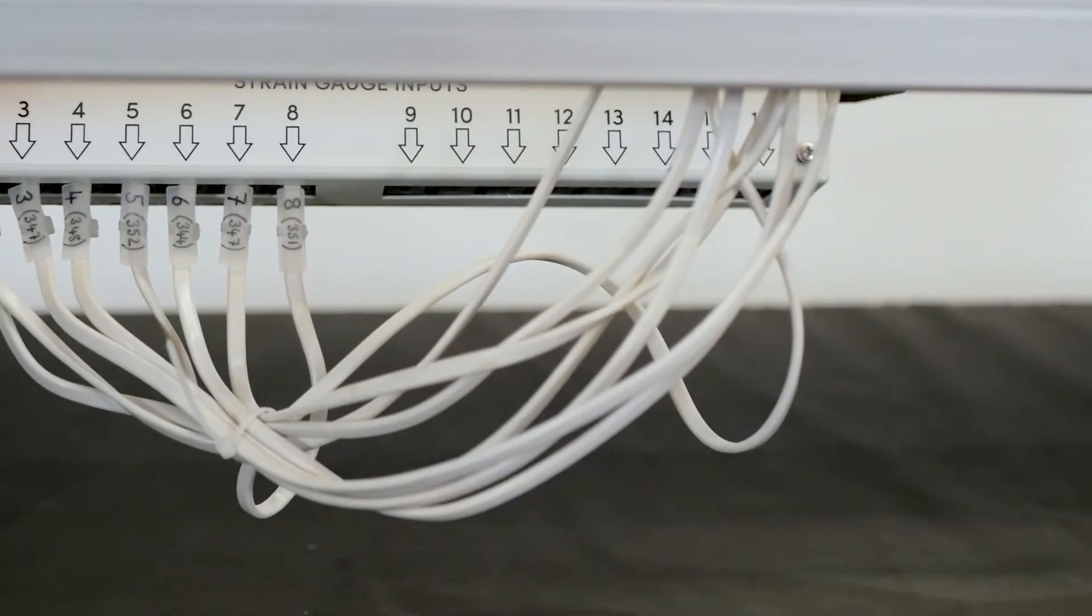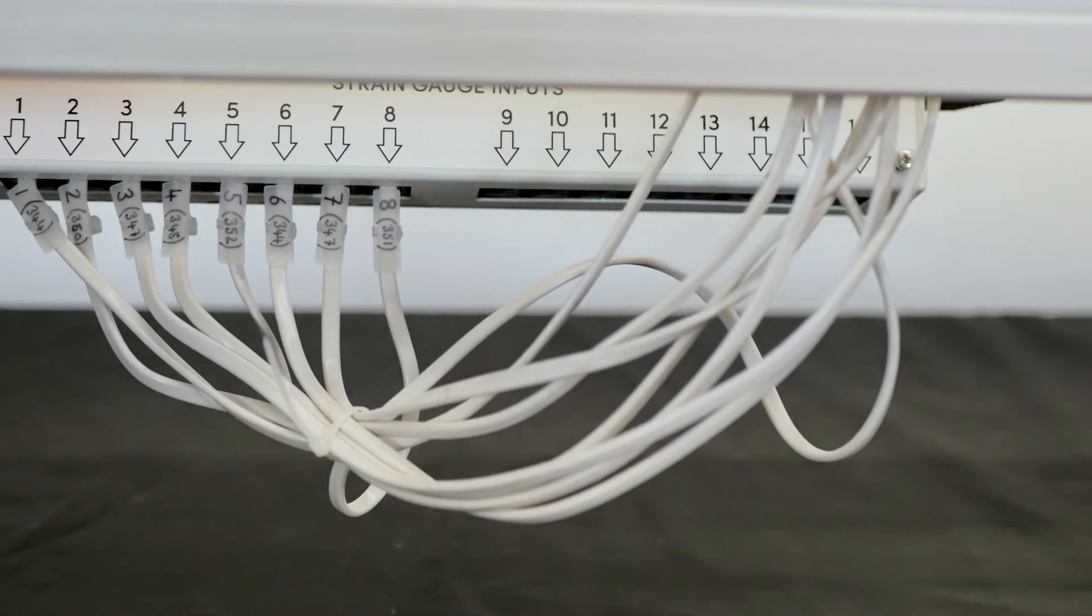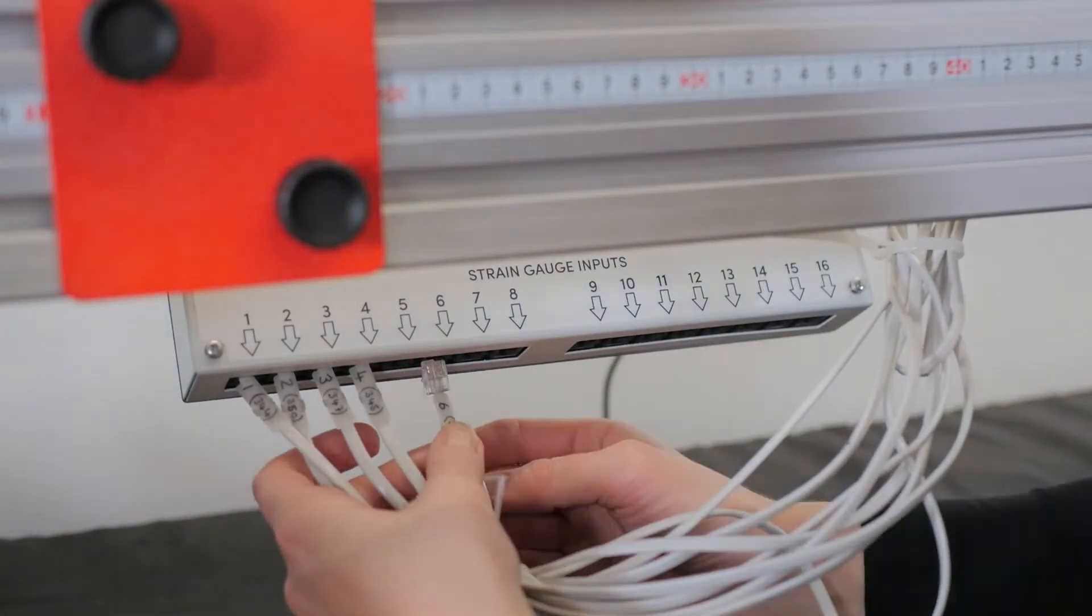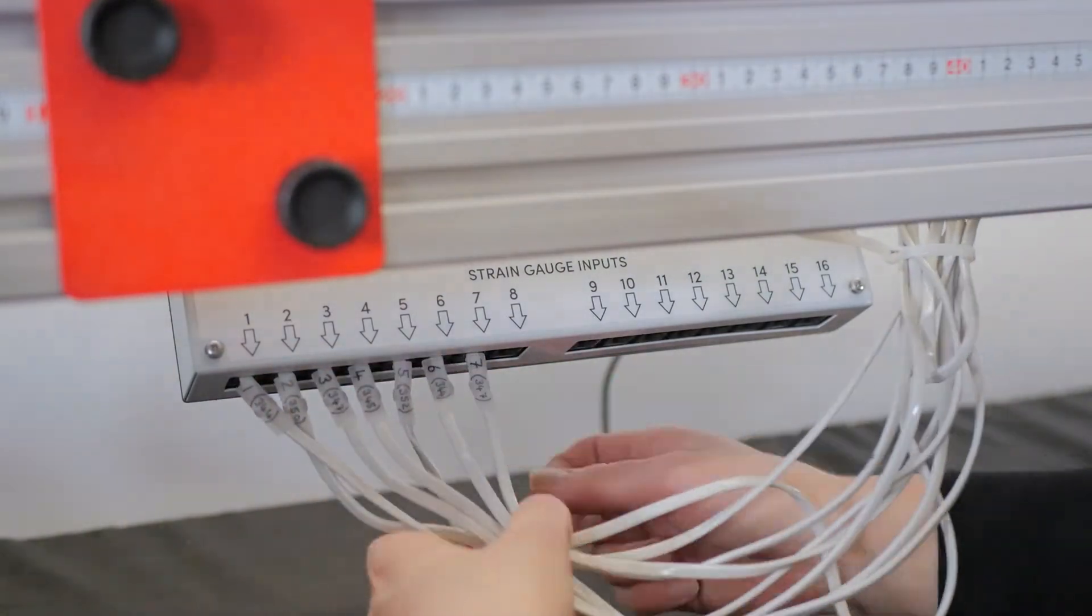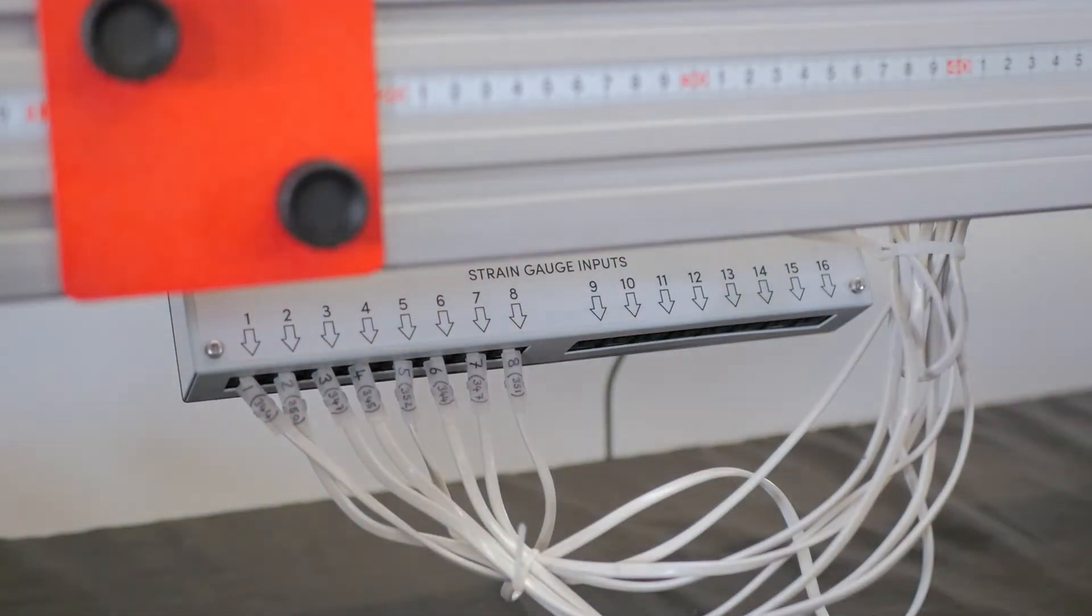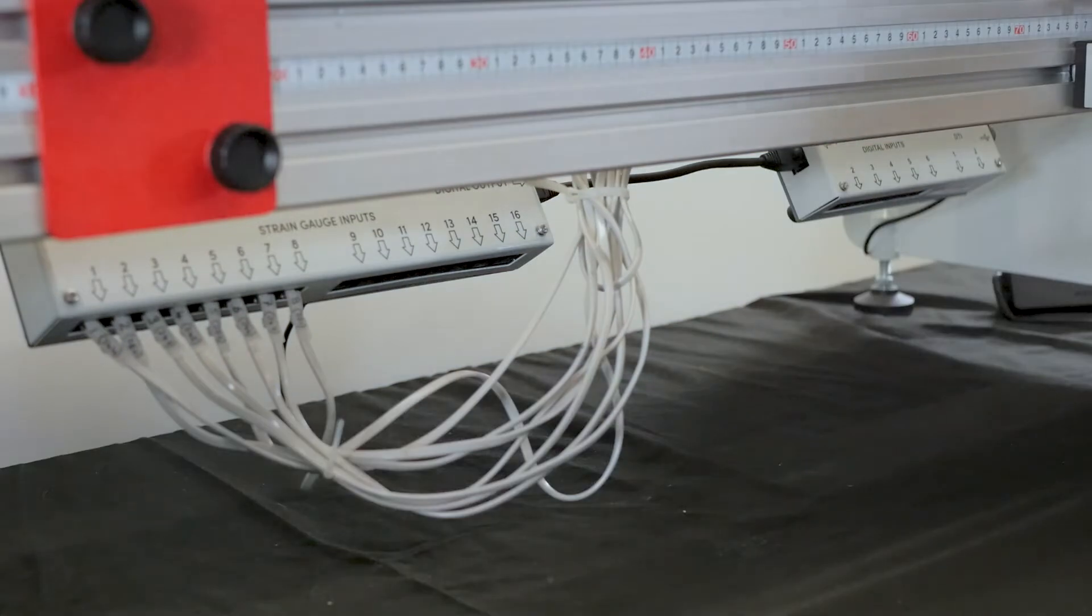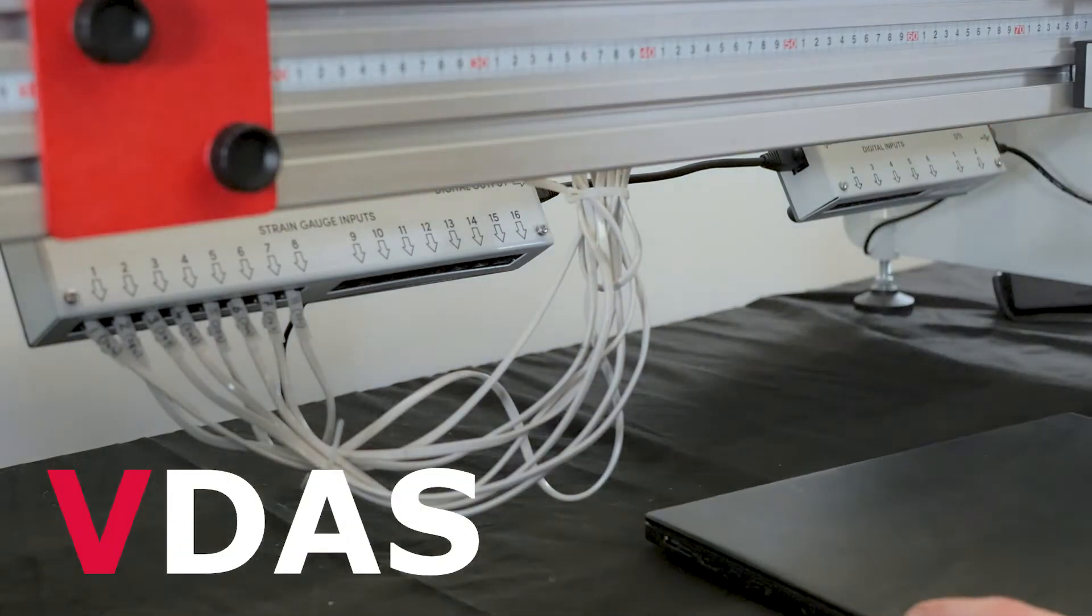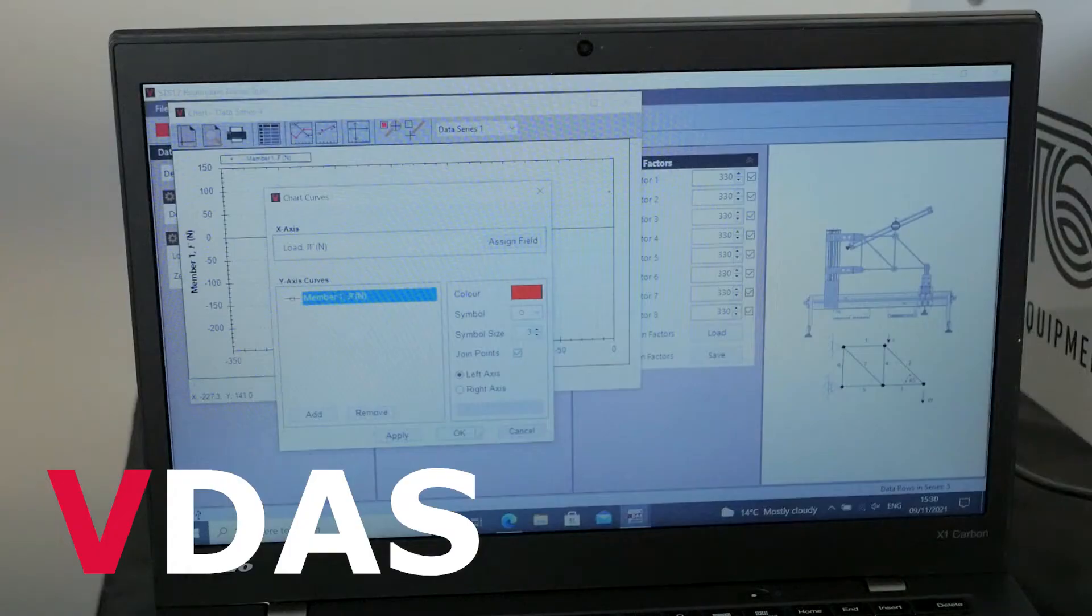Mounted on the structures platform is the strain gauge amplifier that takes data from the cables connected to the individual strain gauges. This is connected to the USB data input hub that comes with the structures platform, allowing you to connect to a suitable computer with the versatile data acquisition system VDAS installed for full data capture and analysis.